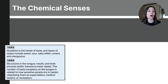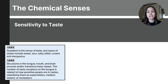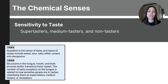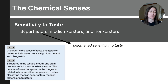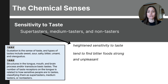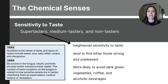Some people are more sensitive to taste than others. We've identified three types of taste sensitivity: supertasters, medium tasters, and non-tasters. Supertasters have a heightened sensitivity to taste and experience flavors more intensely. They tend to find certain foods, especially bitter ones, extremely strong and sometimes unpleasant. This group is more likely to avoid foods like dark green vegetables, coffee, and certain alcoholic beverages due to their intense taste experiences.